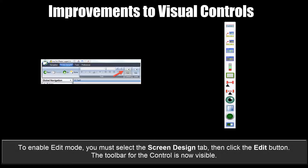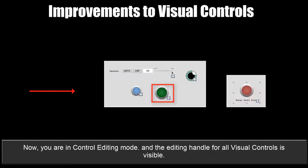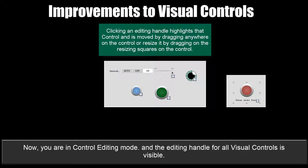To enable Edit Mode, you must select the Screen Design tab, then click the Edit button. The toolbar for the control is now visible. Now you're in Control Editing Mode, and the editing handle for all visual controls is visible. Clicking an editing handle highlights that control, and it is moved by dragging anywhere on the control, or resized by dragging on the resizing squares of the control.